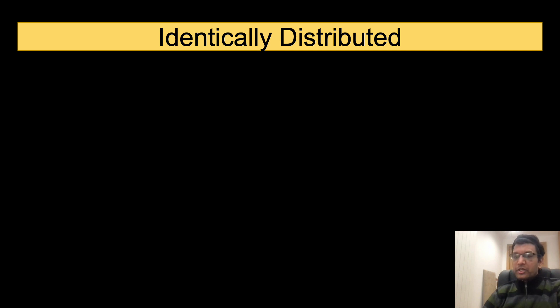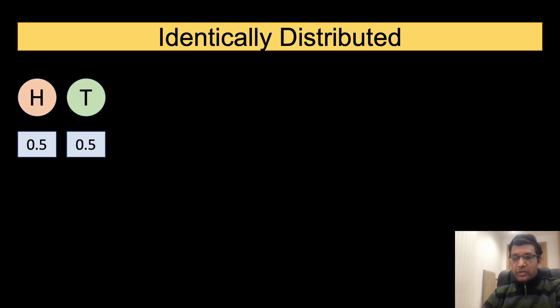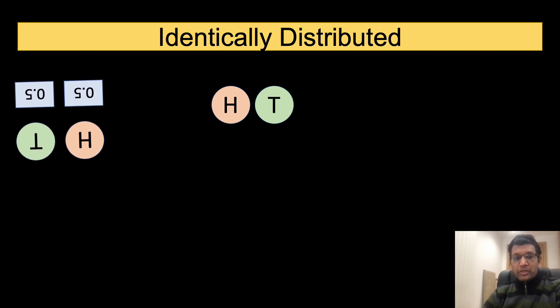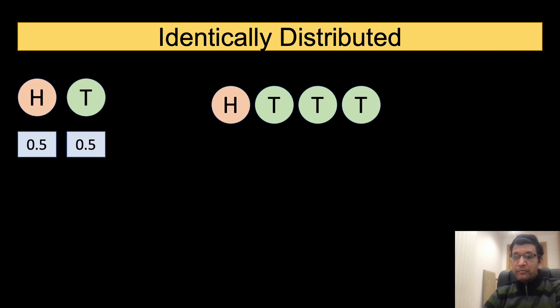Now let us move to the concept of identically distributed. Intuitively, it means that when we are performing multiple tosses, the probability distribution on every toss stays the same. To better understand the concept and to distinguish it from independence, consider a fair coin. We perform four tosses with the same coin and assume that we obtain a sequence of heads followed by three tails. It must be clear that every toss is independent of the previous toss, and that the probability distribution is the same across the multiple tosses.